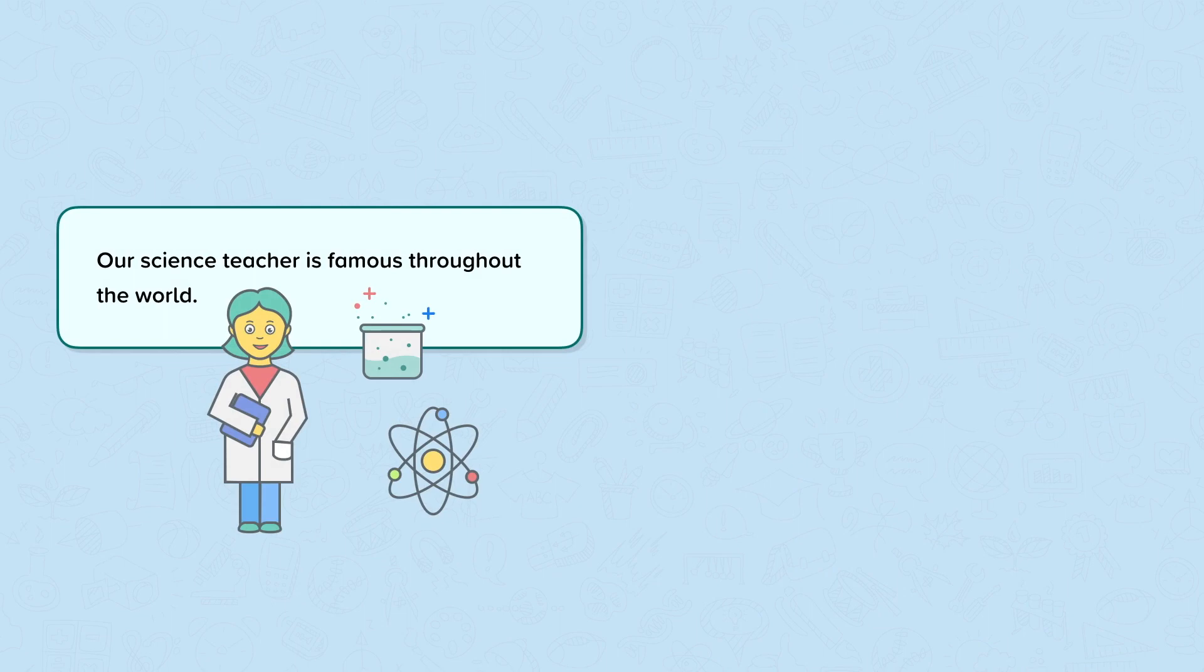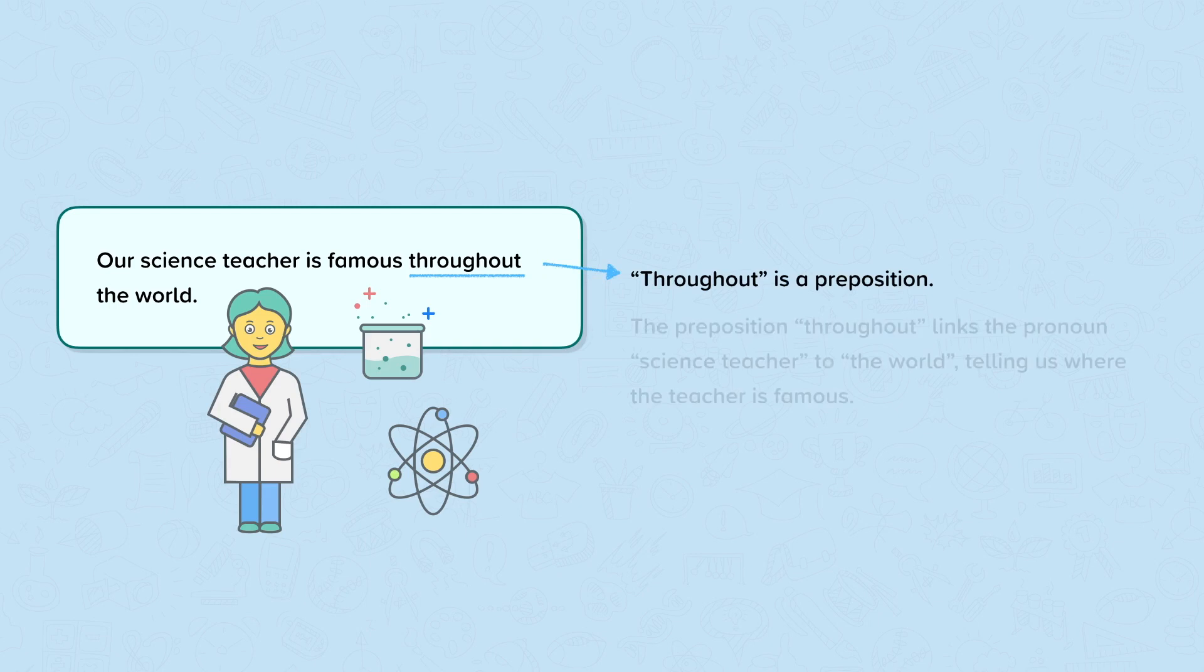In this example, our science teacher is famous throughout the world. Throughout is a preposition. The preposition throughout links the pronoun science teacher to the world, telling us where the teacher is famous.